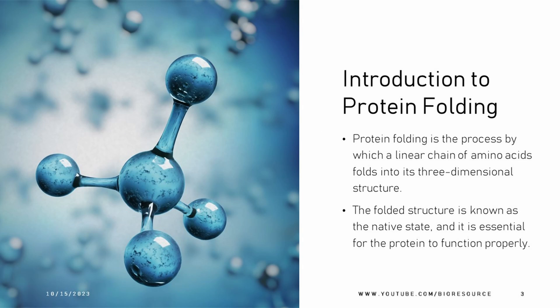So what is protein folding? Protein folding is the process by which a linear chain of amino acids folds into a three-dimensional structure. The folded structure is known as the native state and it is essential for the protein to function properly. It is very important to have a particular structure to function properly.